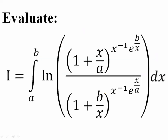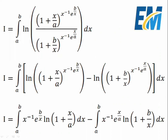Hello guys. Today we are going to solve this integration problem. First, the integrand is in the form ln of alpha over beta, which equals ln alpha minus ln beta.